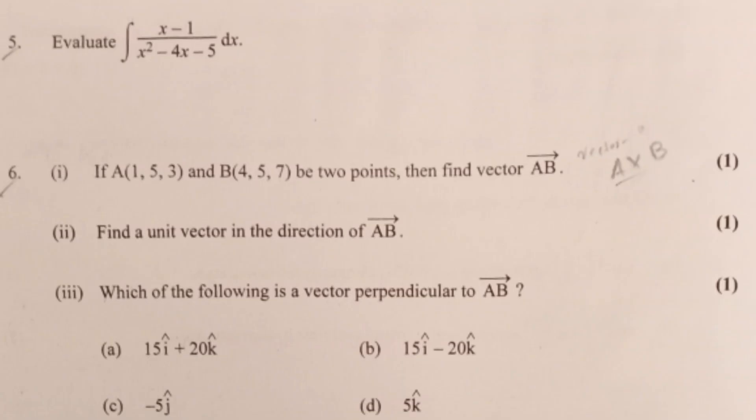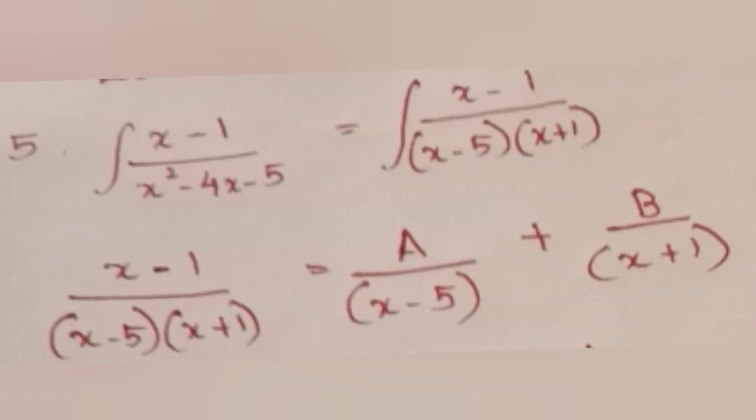Evaluate the integral of (x - 1) divided by (x² - 4x - 5) dx. Answer: Factor the denominator as (x - 5)(x + 1). Use partial fractions: (x - 1) / [(x - 5)(x + 1)] equals A/(x - 5) plus B/(x + 1).